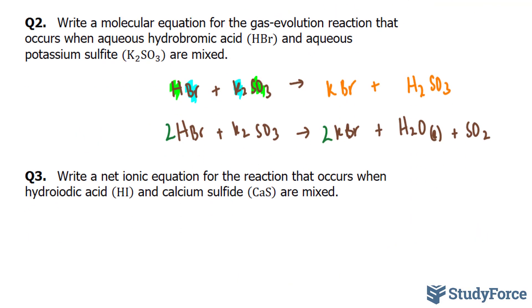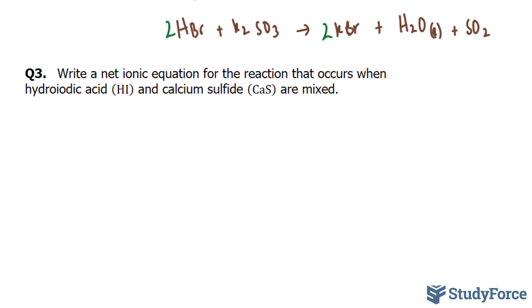That's the answer to question number 2. Finally, in question number 3, they want us to write a net ionic equation for the reaction that occurs between hydroiodic acid and calcium sulfide. Let's do this quickly.